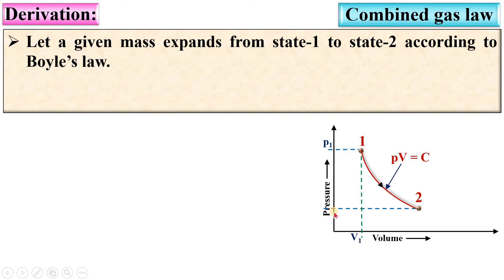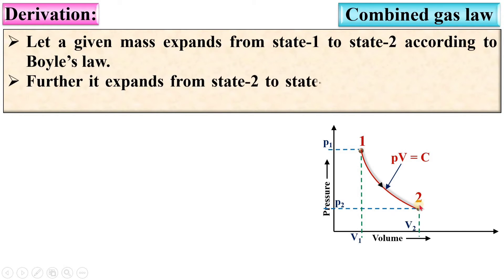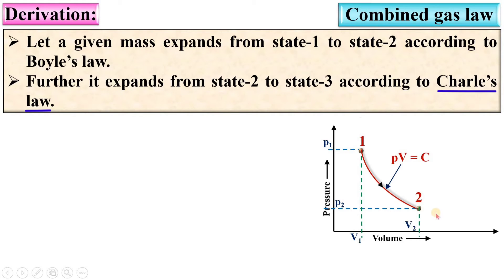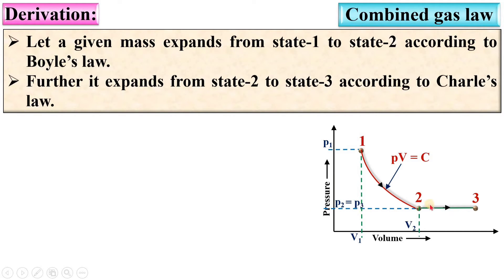Let the pressure be P2 and the volume be V2 at state 2. Now, it further expands from state 2 to state 3 according to Charles' law. The pressure remains constant, so it should be a horizontal line. Therefore P2 is equal to P3, and the corresponding volume is V3. This is the constant pressure process, so V by T is equal to constant.